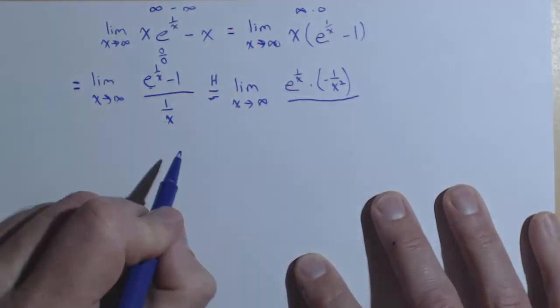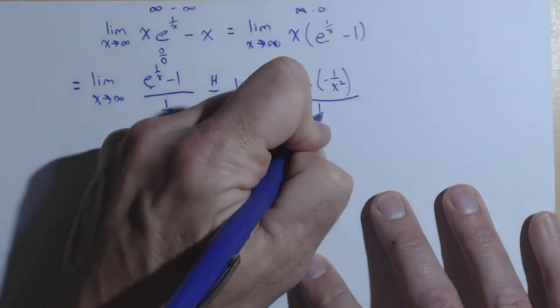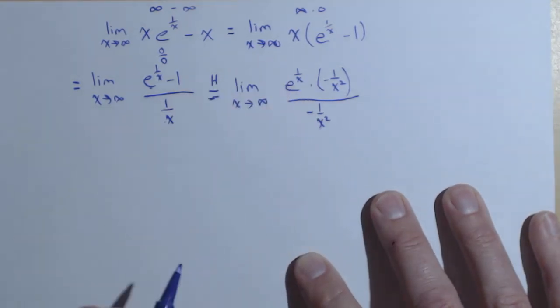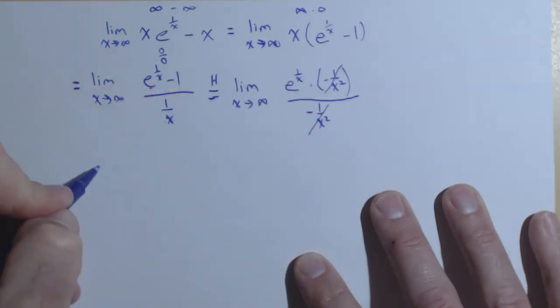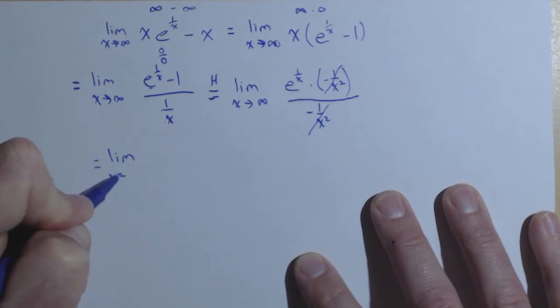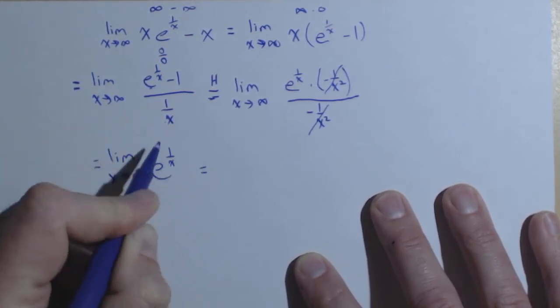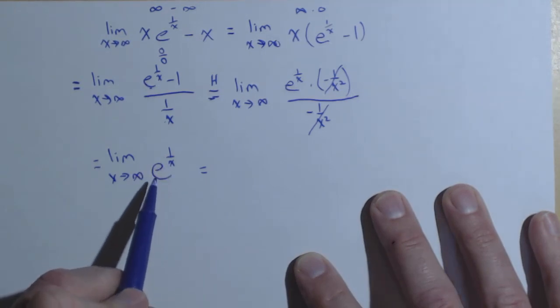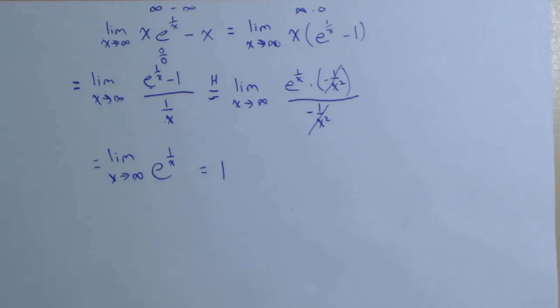Now this is going to work out really nice for us because notice what we have in the denominator, one over x, its derivative is also negative one over x squared. What that's going to do is it's going to allow these to cancel and so all we get left with is the limit as x goes to infinity of e to the one over x. One over x we know goes to zero, e to the zero is one and we've calculated our limit.